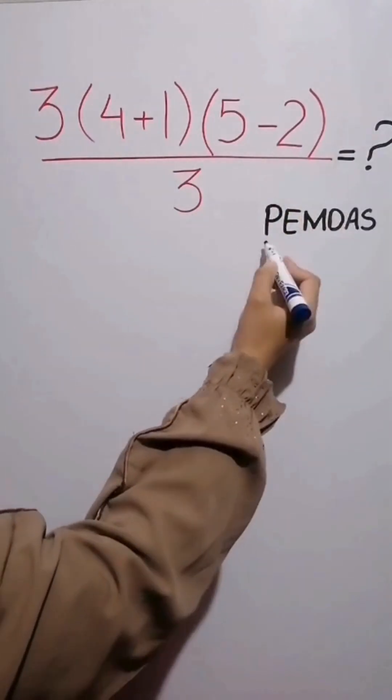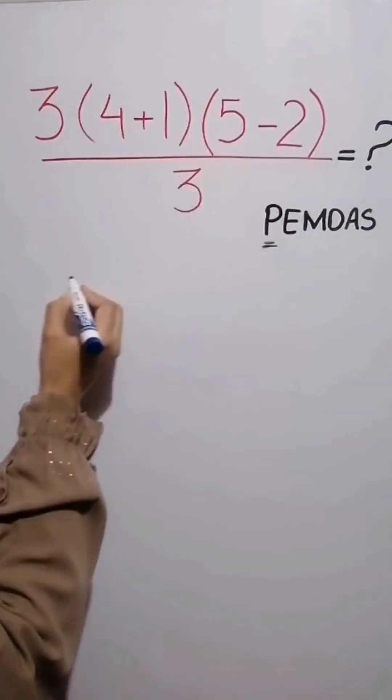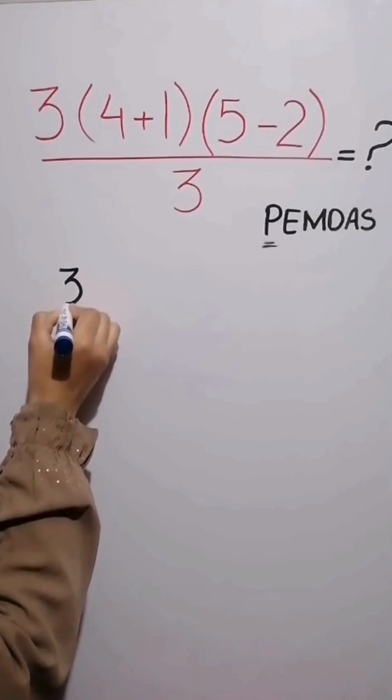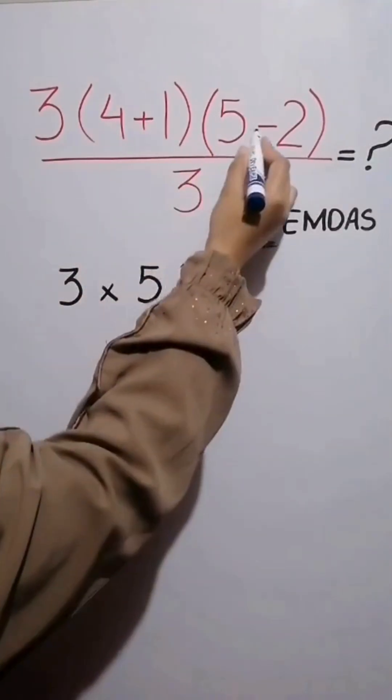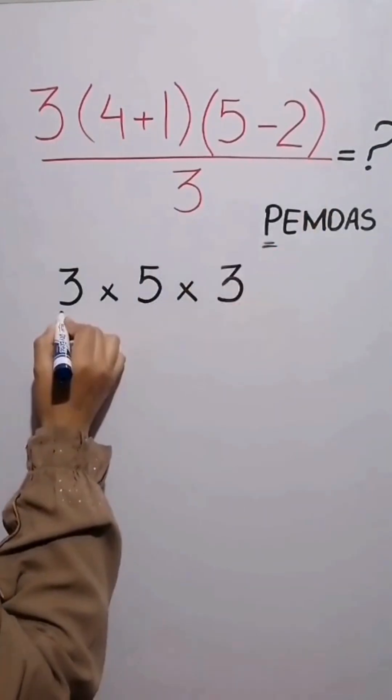In this expression first we simplify parentheses. We have 3 times 4 plus 1 which equals 5, then times 5 minus 2 which equals 3, then over 3.